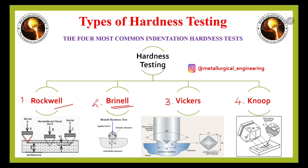In Brinell hardness, the indenter is a solid ball which is much harder compared to the material being deformed. The hardness measured with this kind of indenter is known as Brinell hardness. In Vickers hardness, the indenter cross-section has a specific geometry with an included angle of more than 136 degrees.